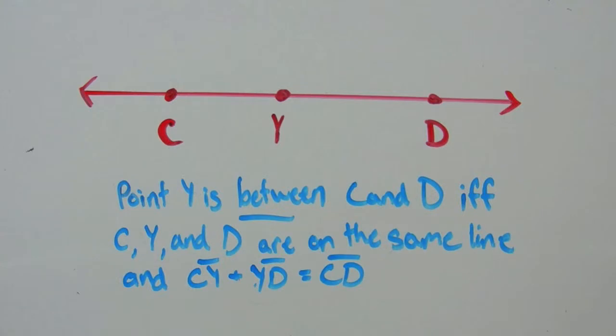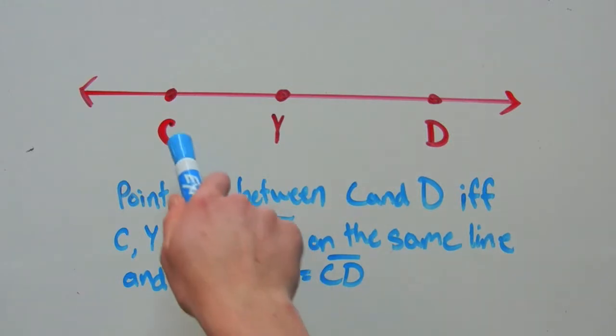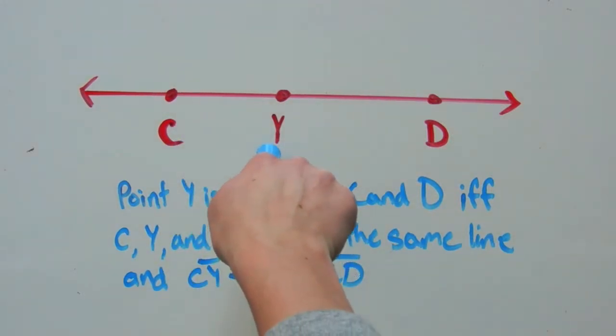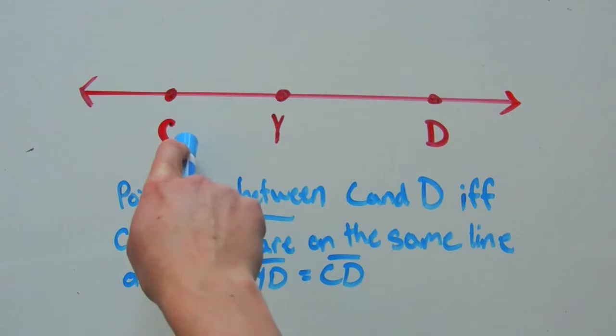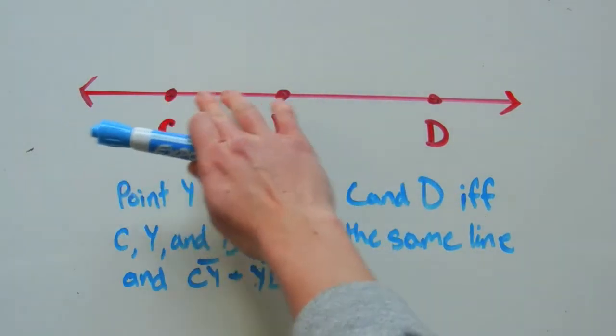Point Y is between C and D, IFF stands for if and only if, C, Y, and D are on the same line and the measurement of the segment CY added to the measurement of the segment YD is equal to the measurement of the entire segment CD.